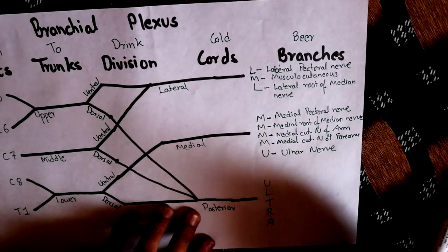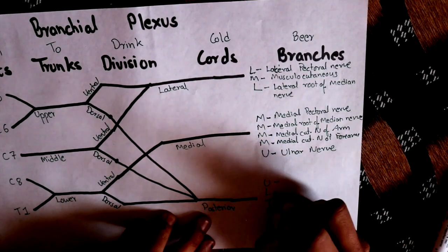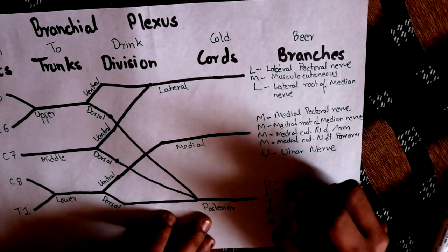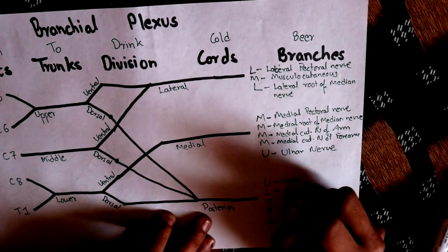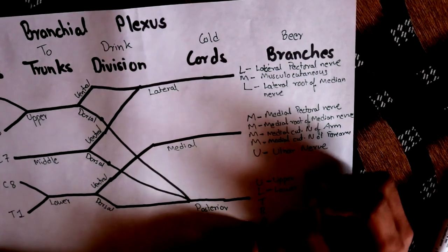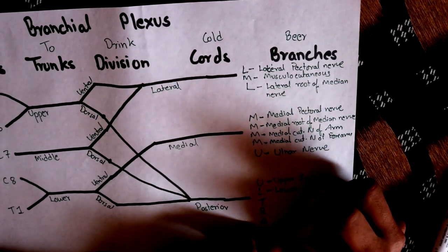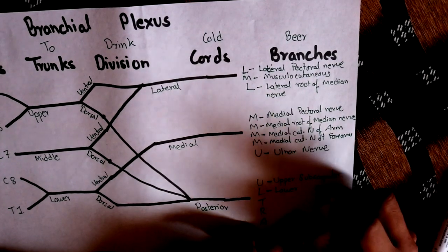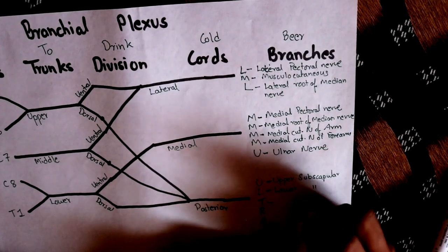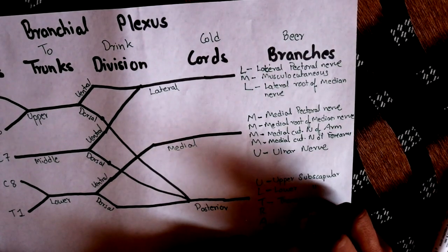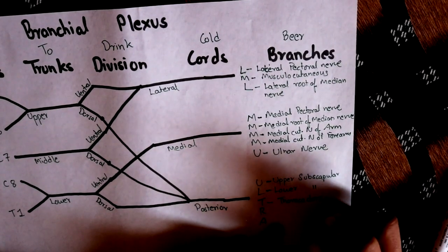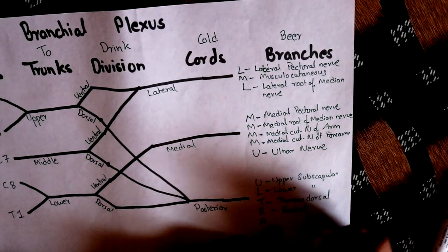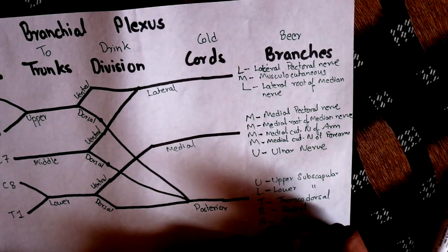For branches from the posterior cord, the mnemonic is 'ULTRA.' The U and L represent upper and lower subscapular nerves. T represents the thoracodorsal nerve, R represents the radial nerve, and A represents the axillary nerve.